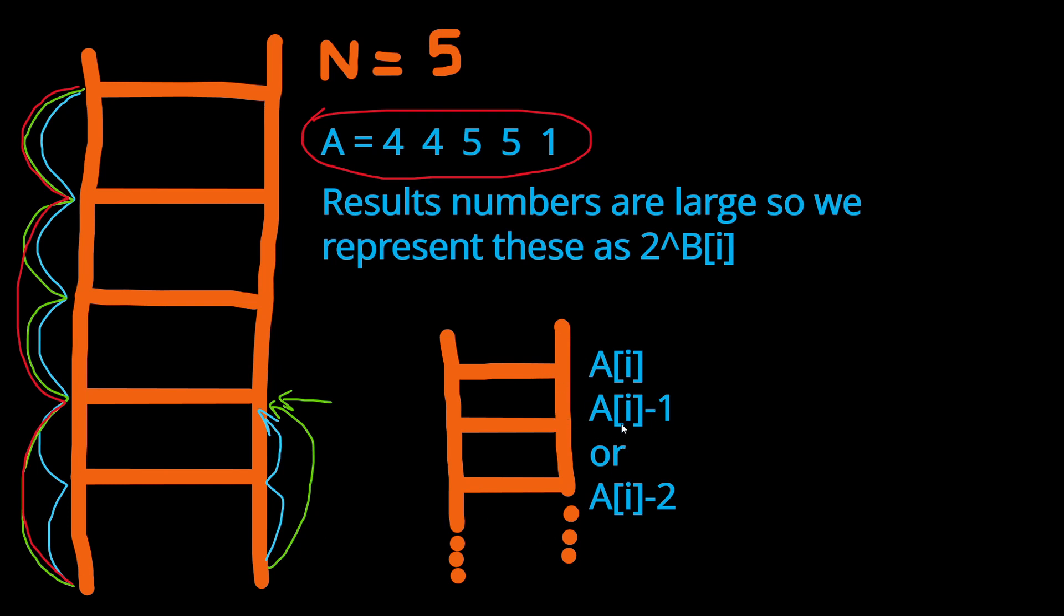And also similarly, to reach the step A[i-1] or the rung A[i-1], we have to look to the two previous rungs. So it's going to be related to the ways we can combine to reach A[i-2] and plus the ways we can combine to reach the rung A[i-3] because these are the two previous rungs before A[i-1].